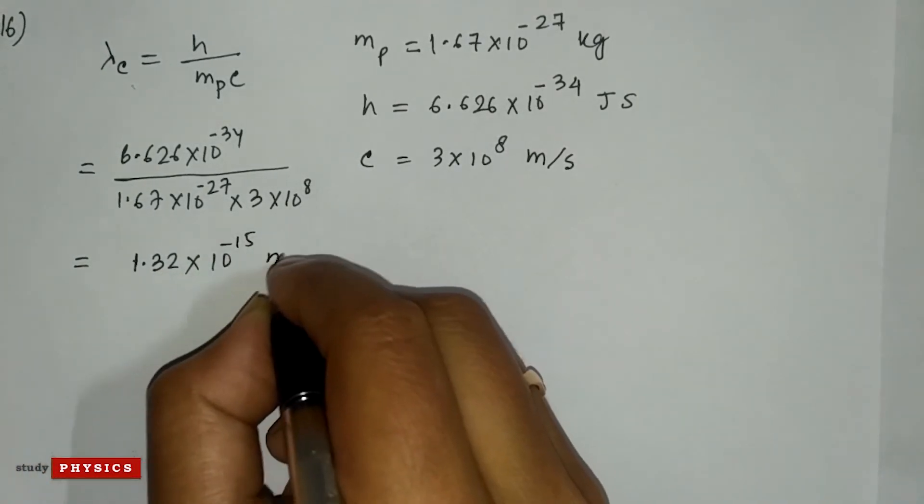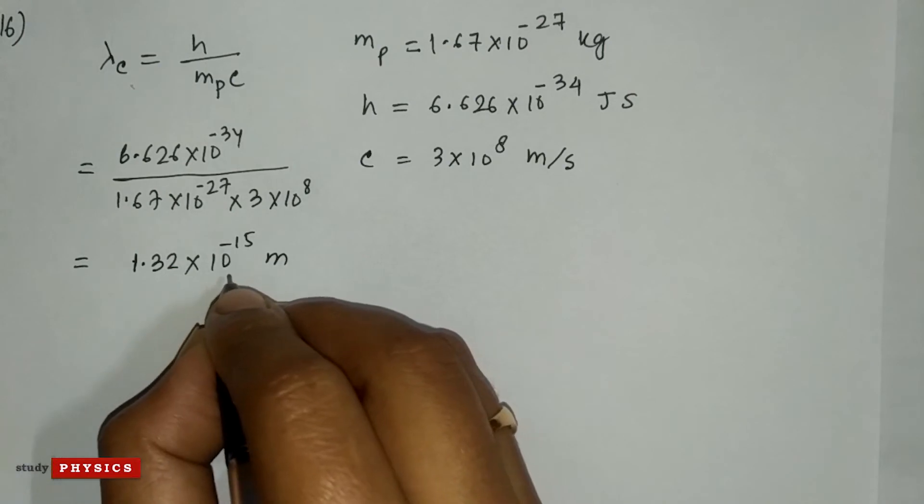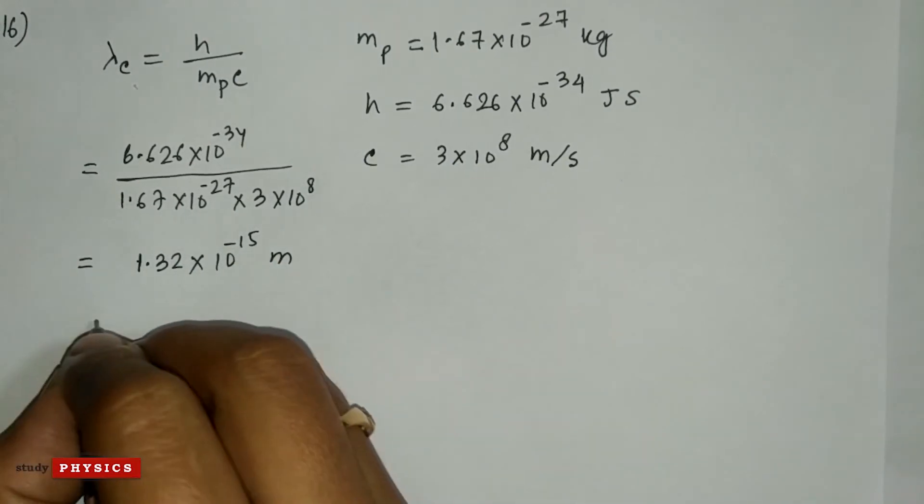And we know that 10 to the power minus 15 meter is femtometer, which is 1.32 fm.